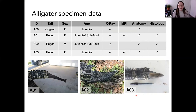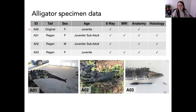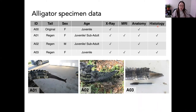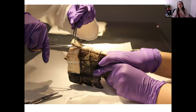We had three regenerated tails and also acquired an alligator with an original tail intact. To study the structure and anatomy, we used imaging techniques such as x-rays and MRIs, gross dissection to examine tissue composition, and histology to examine micro anatomy at the cellular level.